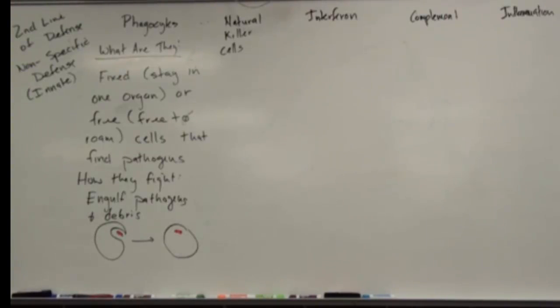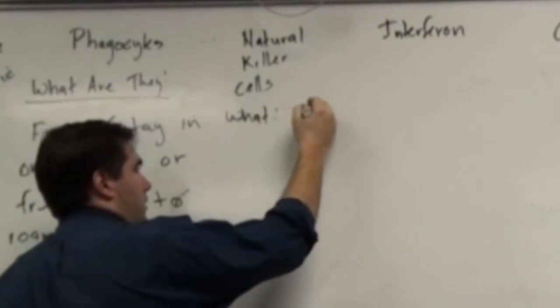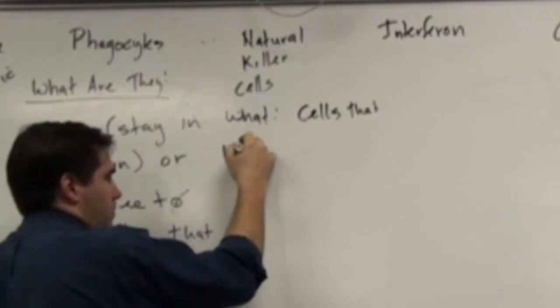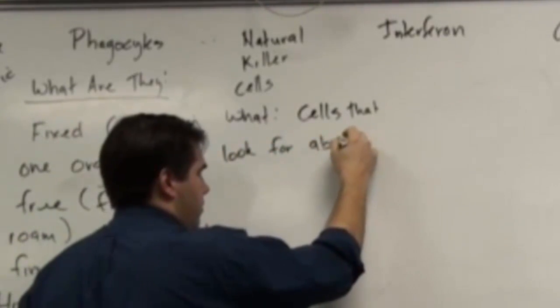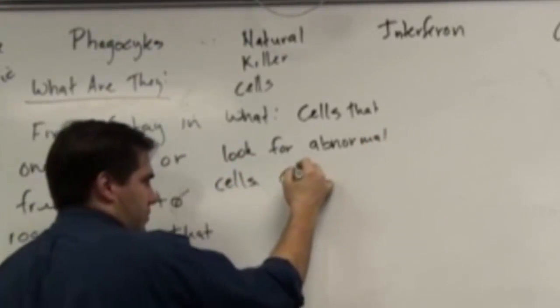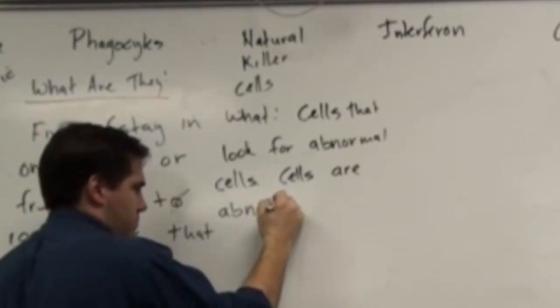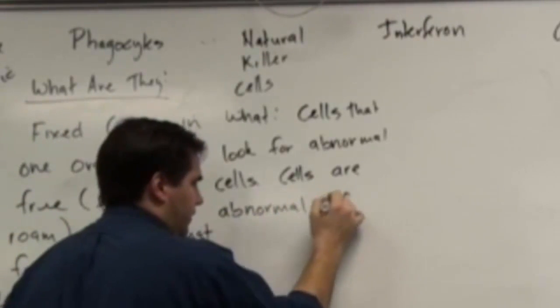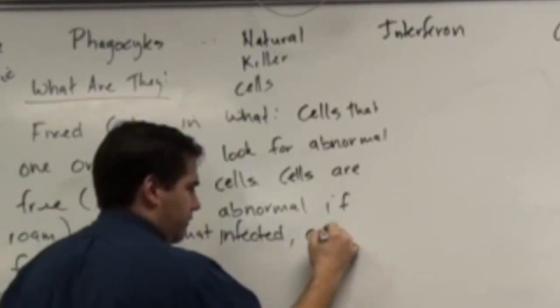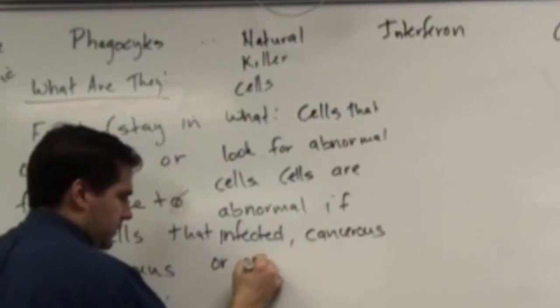Natural killer cells. The what? They are cells that look for abnormal cells. Cells are abnormal if infected, cancerous, or exposed to toxin.